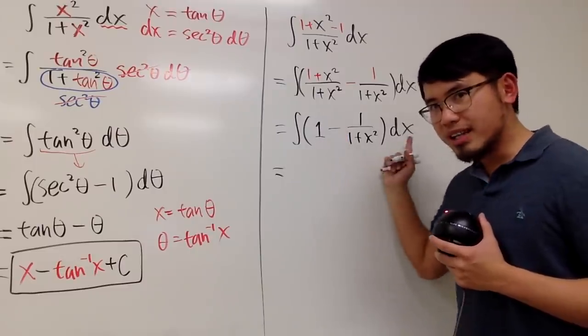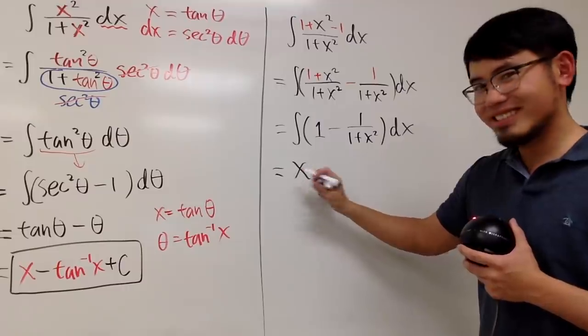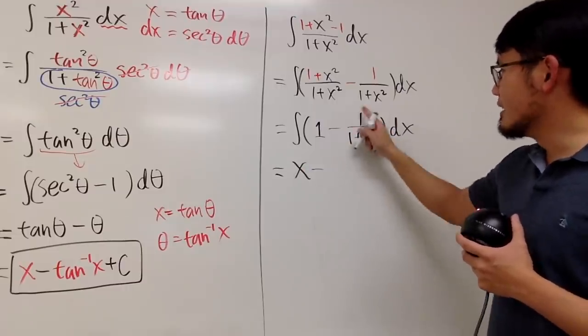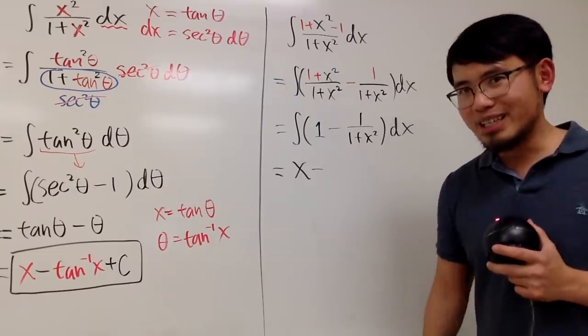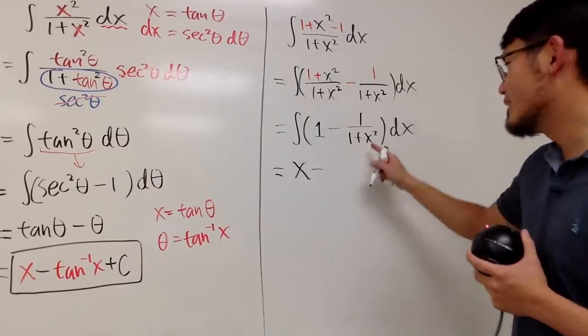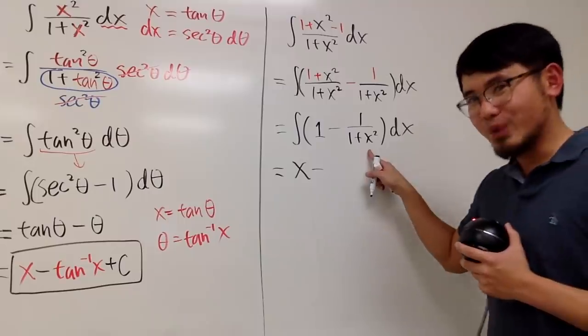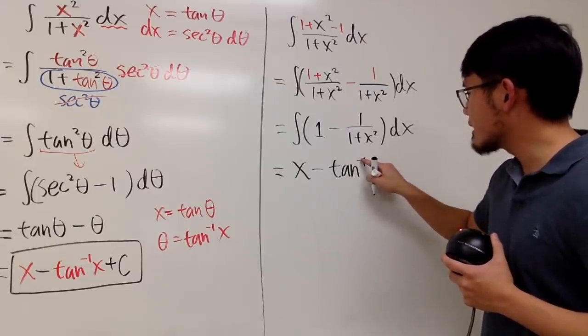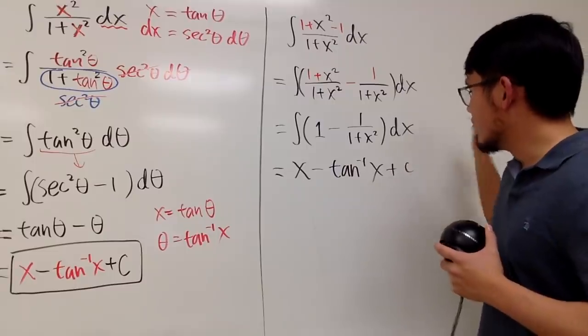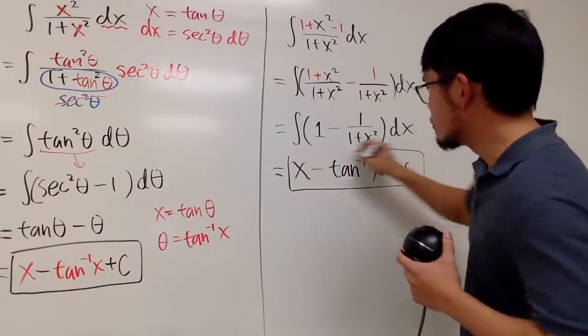Minus 1 over 1 plus x squared dx. What's the integral of 1 in the x world? Yes, it's just x. Minus, what's the integral of 1 over 1 plus x squared? Here. If you would like, you can do trig sub. But I recognize that the derivative of inverse tangent will give us this. So the answer is just inverse tangent of x. And then we are done.